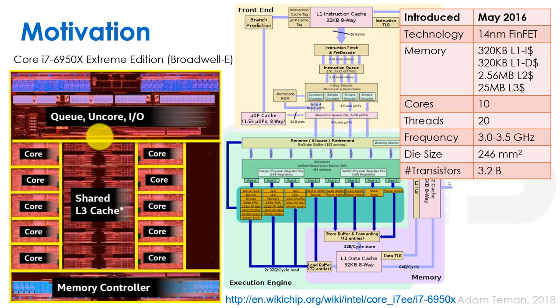Looking at a more modern processor — the Core i7 6950X Extreme Edition, also known as the Broadwell-E architecture — this is a very large chip. Introduced in 2016, it uses a 14 nanometer FinFET process. It has 25 megabytes of L3 cache, 10 cores, runs 20 threads in parallel, operates at a few gigahertz, has a 246 mm² die size, and features over 3.2 billion transistors.